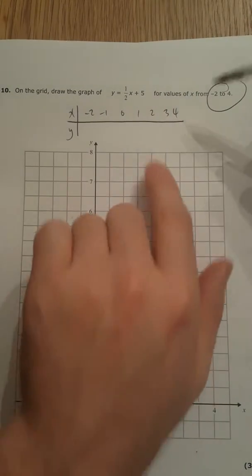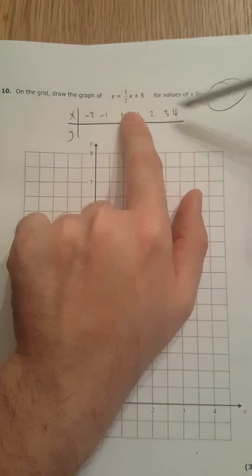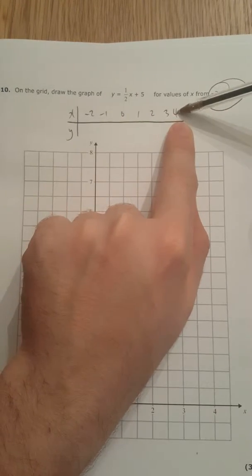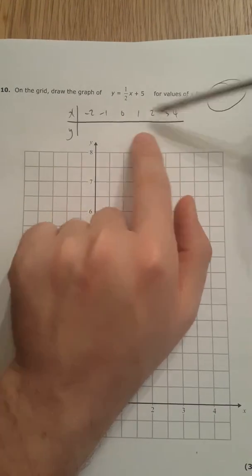It tells you that, and you can do half of the x. So half of that 4 is 2, add 5 is 7, and so on.